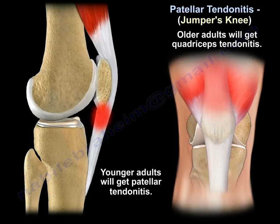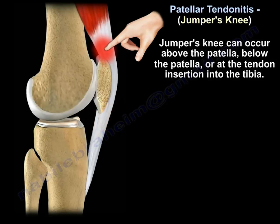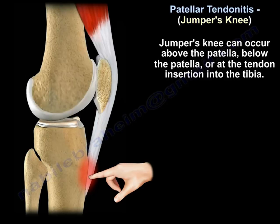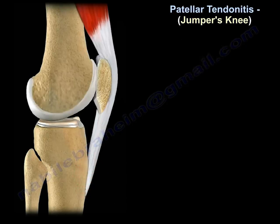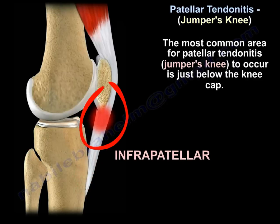Young adults will get patellar tendonitis, and older adults will get quadriceps tendonitis. Jumper's knee can occur above the patella, below the patella, or at the tendon insertion into the tibia. The most common area for patellar tendonitis to occur is just below the kneecap — infrapatellar.